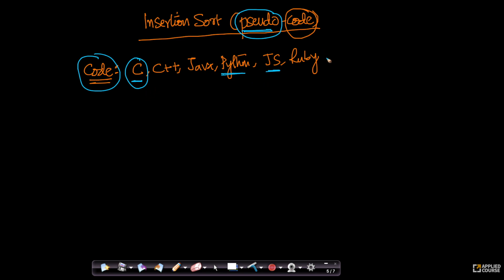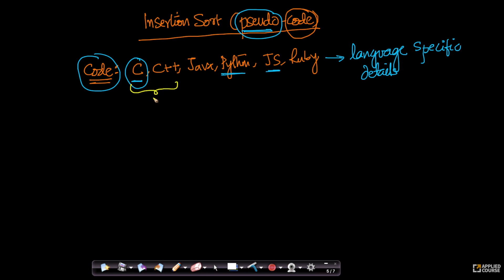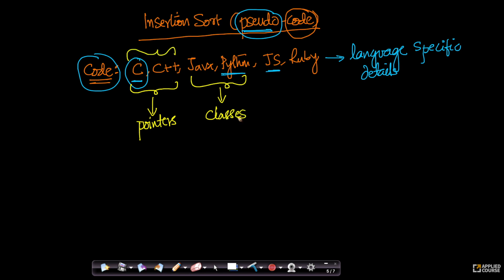Number two: there are many language-specific details that come into play when writing code in any language. For example, if I start writing code in C and C++, I will have to use pointers extensively, which are not there in other languages. Or if I use Java or JavaScript, I might have to use object-oriented programming and concepts called classes, which somebody who knows C may not know. These language-specific details can make the code cumbersome to understand.